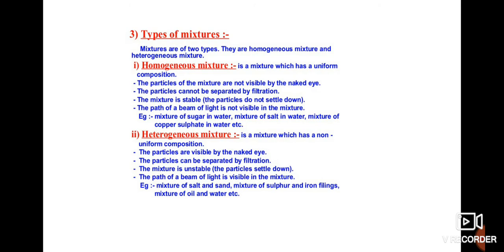Mixtures are classified into two groups: homogeneous and heterogeneous. 'Homo' means same or uniform; 'hetero' means non-uniform or different. A homogeneous mixture has a uniform composition and its particles cannot be seen with the naked eye. The particles can be separated by filtration and will not settle if kept undisturbed. If you pass light through such a mixture, the light will not scatter — this is related to the Tyndall effect, which is not shown by homogeneous mixtures.